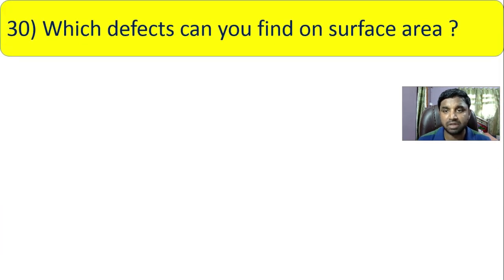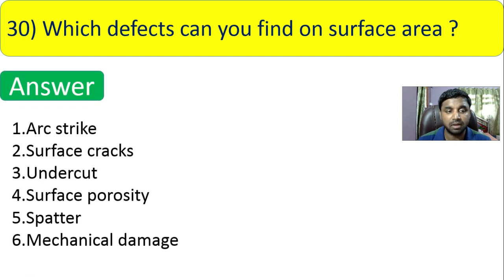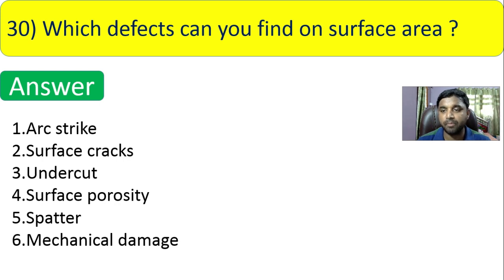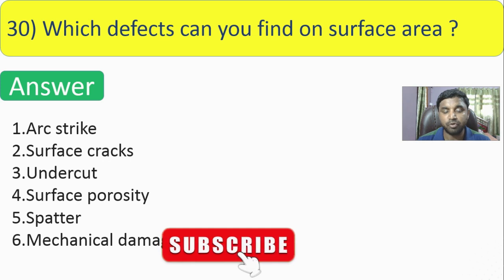Question 30 (last question): which defects can you find on the surface area of a weld? The six main surface defects are: arc strike, surface crack, undercut, surface porosity, spatter, and mechanical damage.